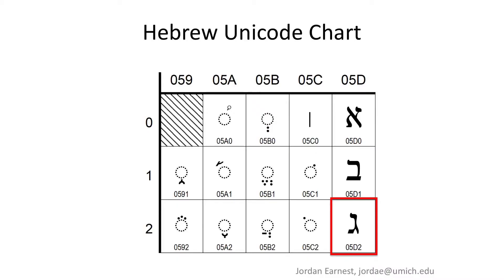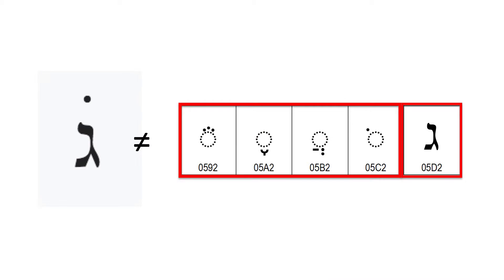Furthermore, Unicode has limitations. While all three languages are written in Hebrew characters, there are different ligatures and diacritic marks that make them unencodable. For example, the Unicode for the letter Gimel can only be combined with the Unicode of four diacritic markers. However, Judeo-Arabic necessitates a Gimel with the dot directly on top, corresponding to a distinct Arabic letter.